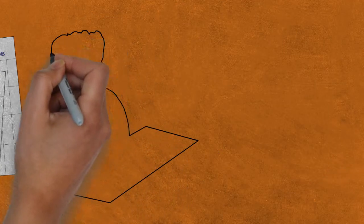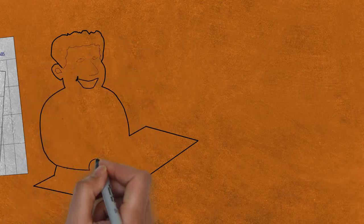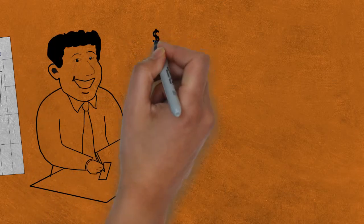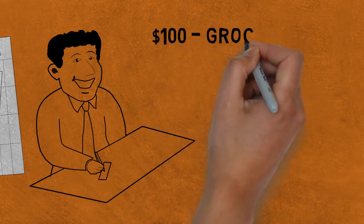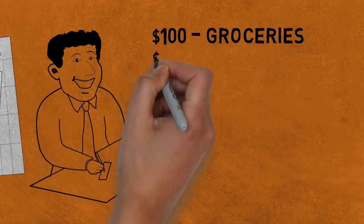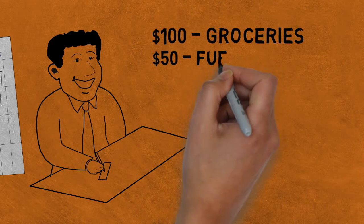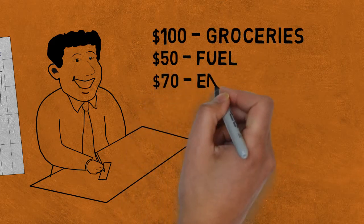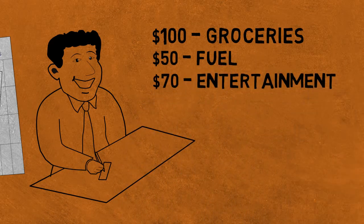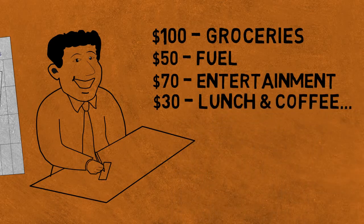You work out how you are going to allocate your money with our easy-to-use money planner. Let's say you allocate $100 each week for groceries and $50 for fuel, $70 for entertainment, and $30 for lunch and coffee, and so on.